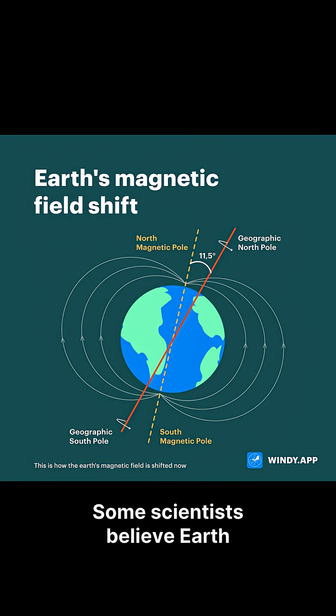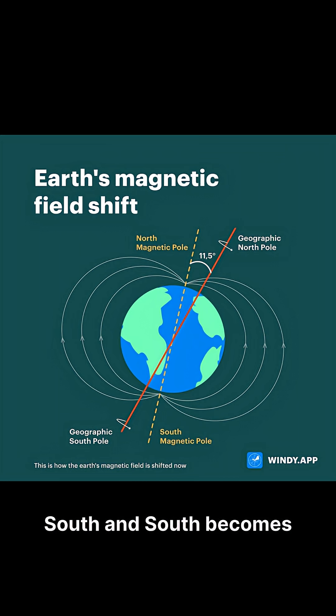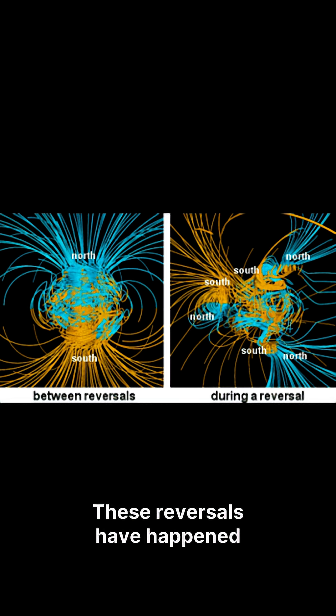Some scientists believe Earth may be heading toward a magnetic pole reversal, where North becomes South and South becomes North. These reversals have happened many times in history, but the last one was 780,000 years ago.